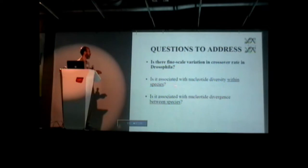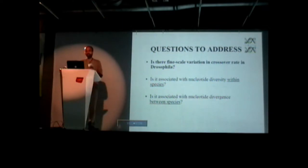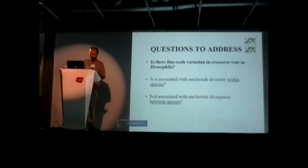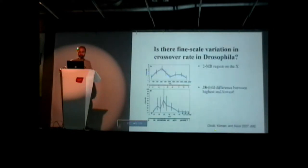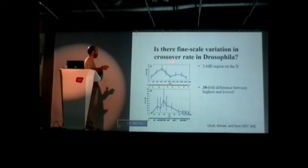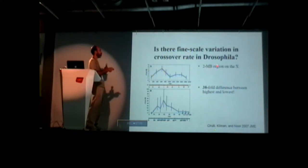If fine-scale variation exists, is it associated with nucleotide diversity within species, and is it associated with nucleotide divergence between species? So these are the questions we've been studying for several years. First: is there fine-scale variation in recombination rate across Drosophila? We looked at a two-megabase region on the X chromosome, between two visible markers: the yellow gene and the white gene.